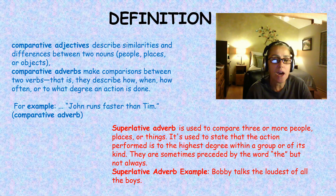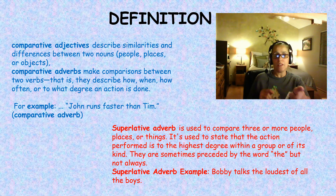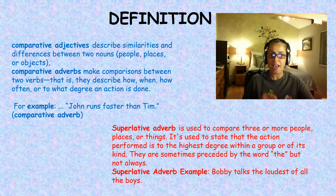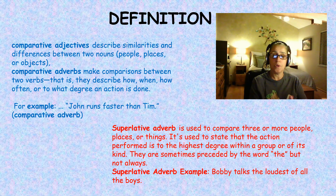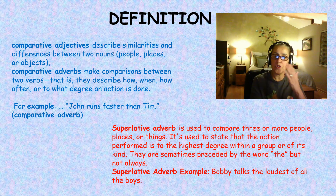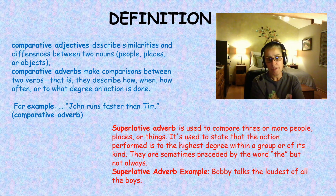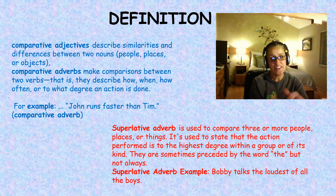Here's an example: John runs faster than Tim. Who ran faster? John. The word 'than' is also an example of how you're comparing two different nouns. That's the comparative — you're comparing two different things. I like strawberry ice cream more than chocolate.